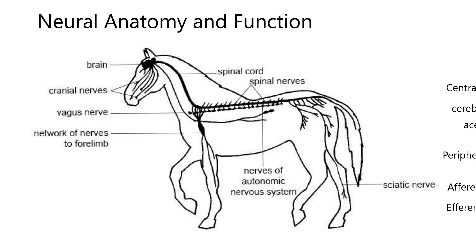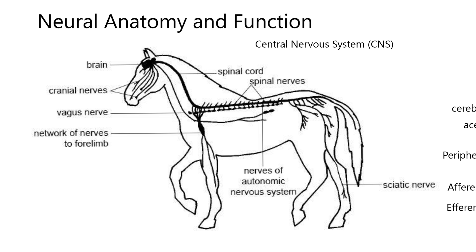We know all the way along it's surrounded by bone. The skull surrounds the brain, and the vertebral column surrounds the entire spinal cord. When we talk about those two structures, we're talking about the central nervous system.